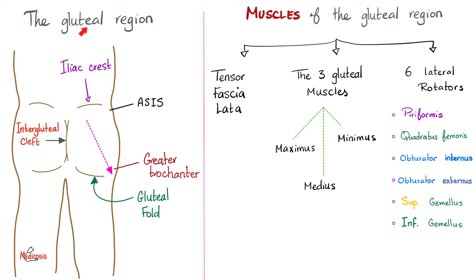The gluteal region extends from the iliac crest superiorly to the gluteal fold inferiorly, and from the intergluteal cleft medially to a line extending from the anterior superior iliac spine to the greater trochanter of the femur laterally. Now let's talk about the muscles in the gluteal region.